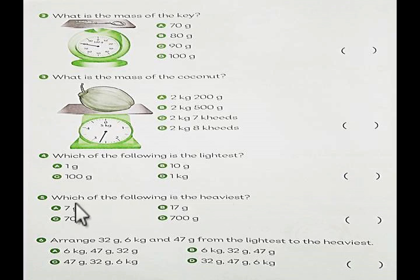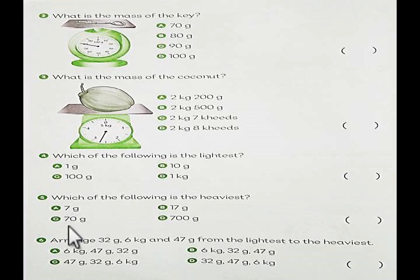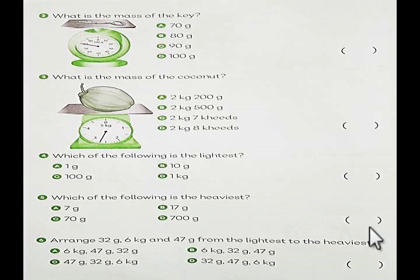Number 5. Which of the following is the heaviest? A: 7 grams. B: 17 grams. C: 70 grams. D: 700 grams. Choose A, B, C, or D.